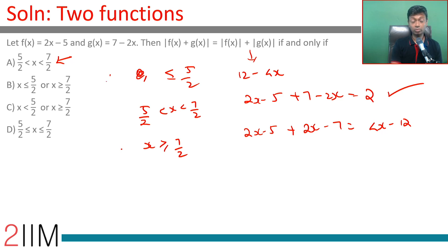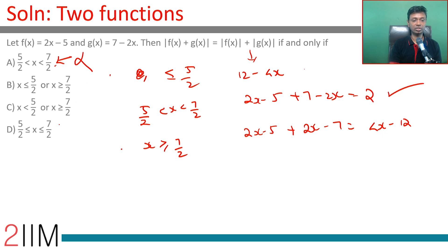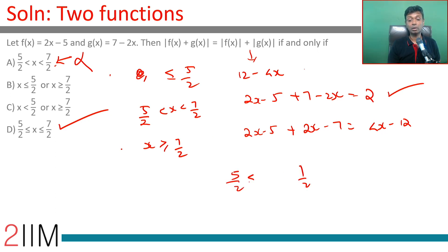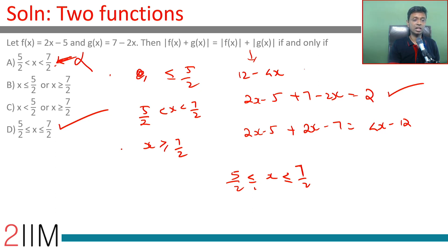But we must be careful about the endpoints. When x = 5/2: 12 - 4(5/2) = 12 - 10 = 2. That works. When x = 7/2: 4(7/2) - 12 = 14 - 12 = 2. That also works. So x = 5/2 and x = 7/2 are both valid — the answer is the closed interval [5/2, 7/2].